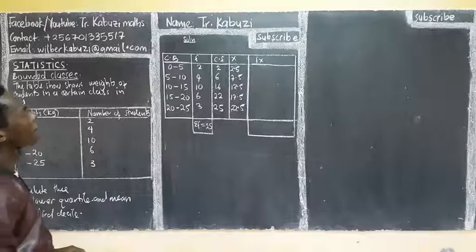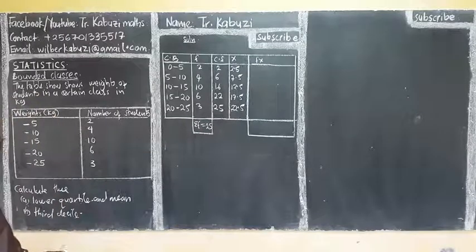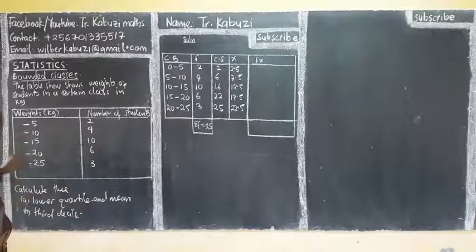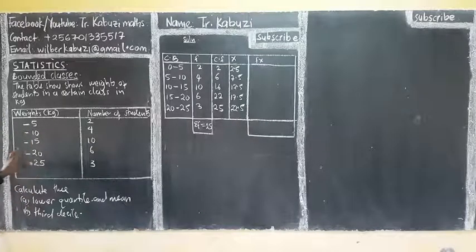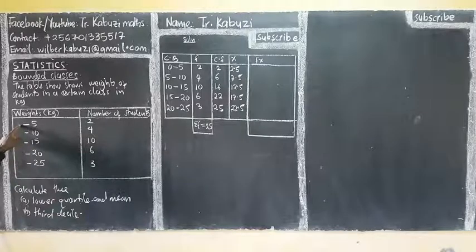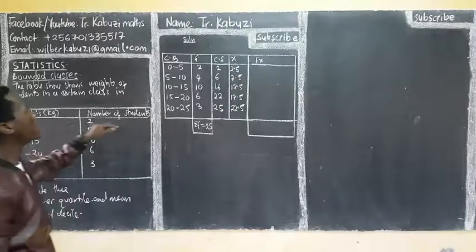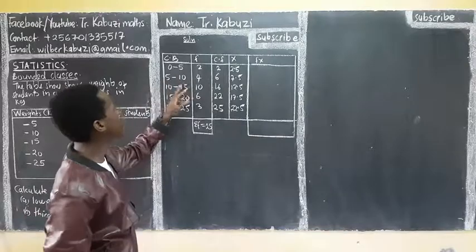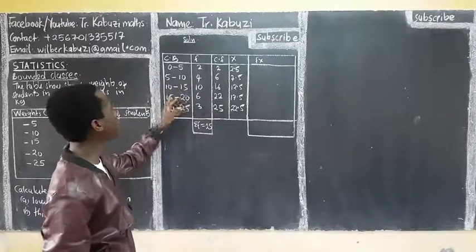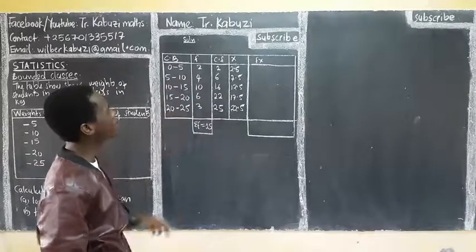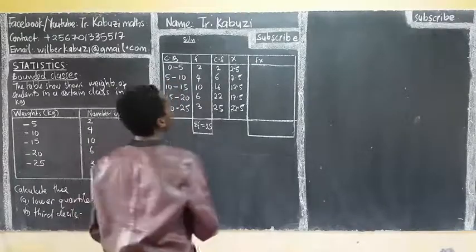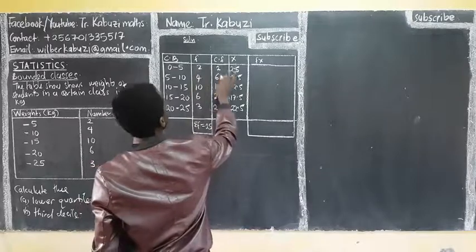So to get the mean means summation f times x over the sum of the frequencies. So mean now from here can easily straight away our class boundaries. Whenever you have 5, this one means starting from 0. So from 0 to 5, 5 to 10, 10 to 15, 15 to 20, 20 to 25. You see the classes here. These are boundaries. So now to get my f of x, I multiply this times this.